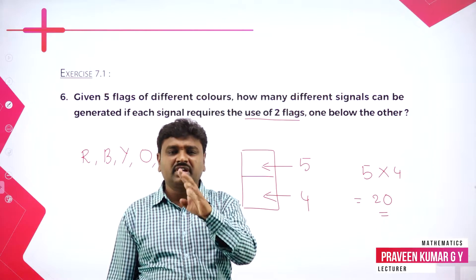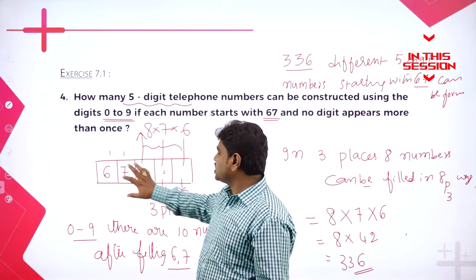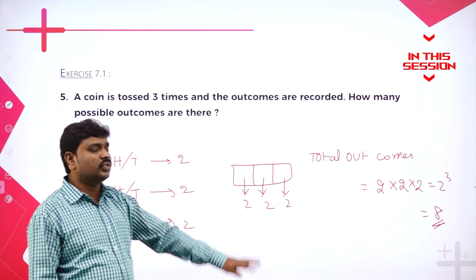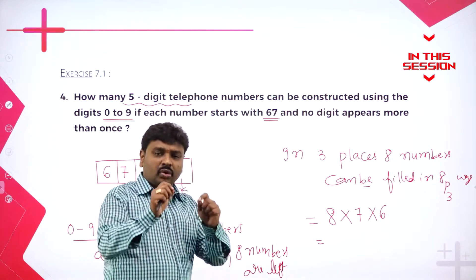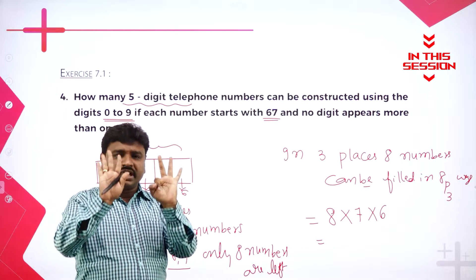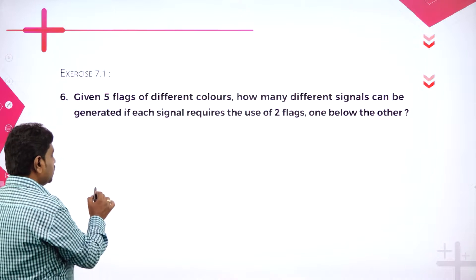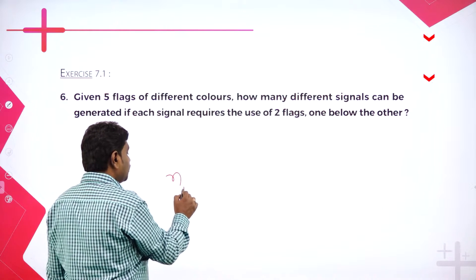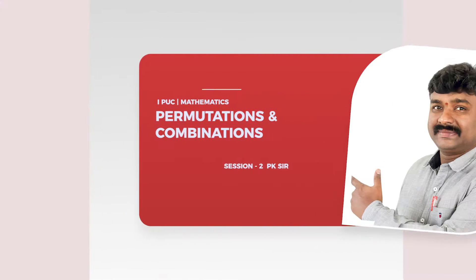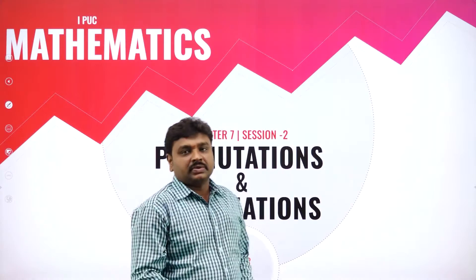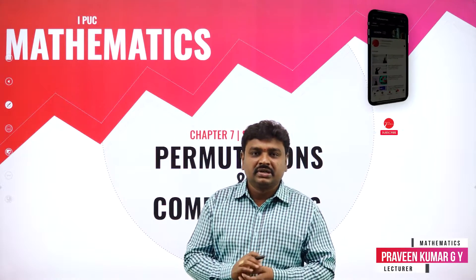The bottom box can be filled in five ways; the remaining bottom box in four ways because one is already filled. These three places: this box can be filled in eight ways, this box in seven ways. When you toss a coin there are two possibilities, so two into two into eight gives eight different outcomes. Zero to nine has ten digits; if I remove six and seven I have eight digits. NPR means arranging N things in R places. NPN means N factorial.